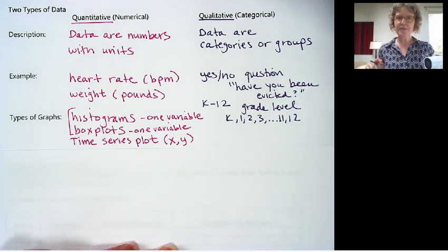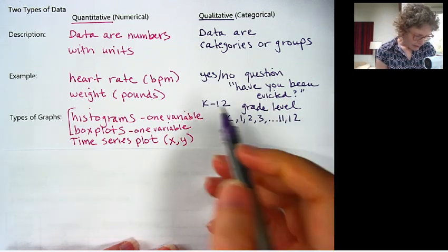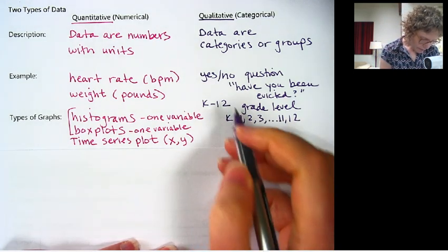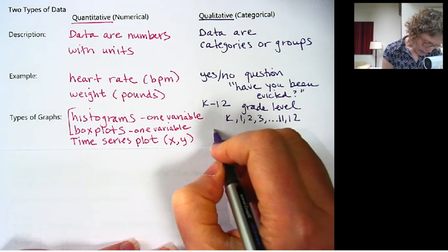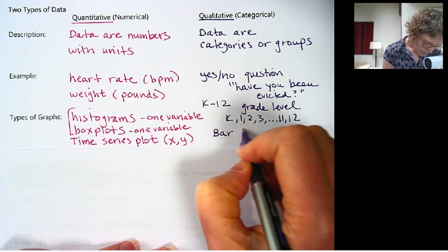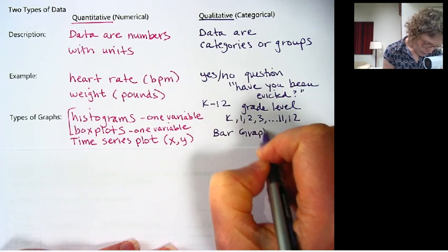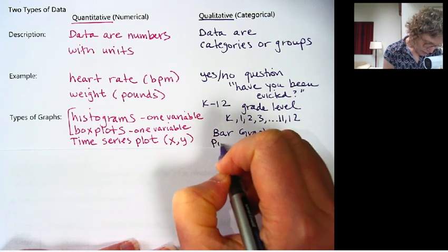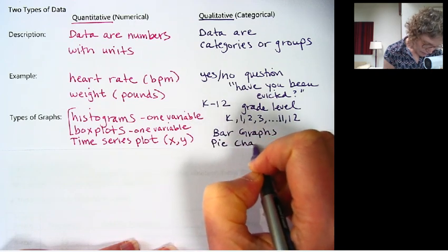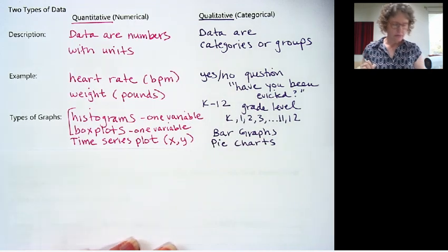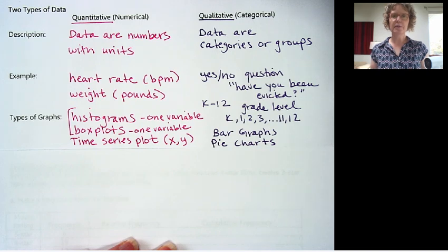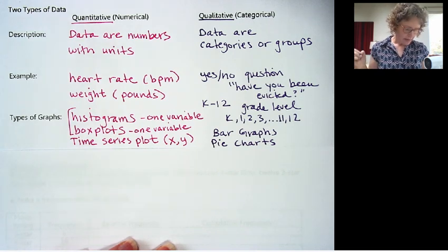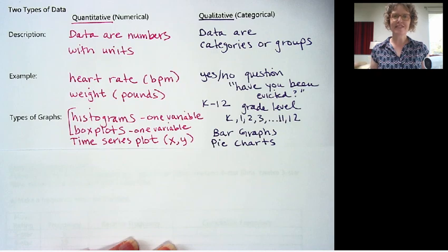Now we have two types of graphs that we can use for qualitative variables. And they are bar graphs and pie charts. Okay, so that's our two types of variables. And we'll look at graphing those in future videos. Thanks for watchin'.